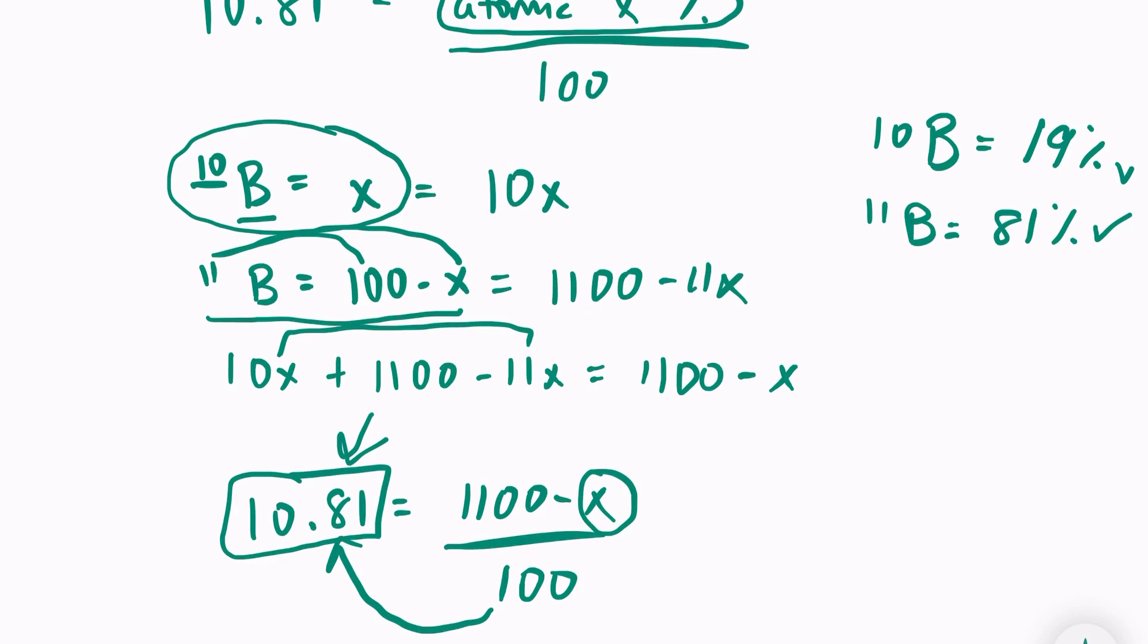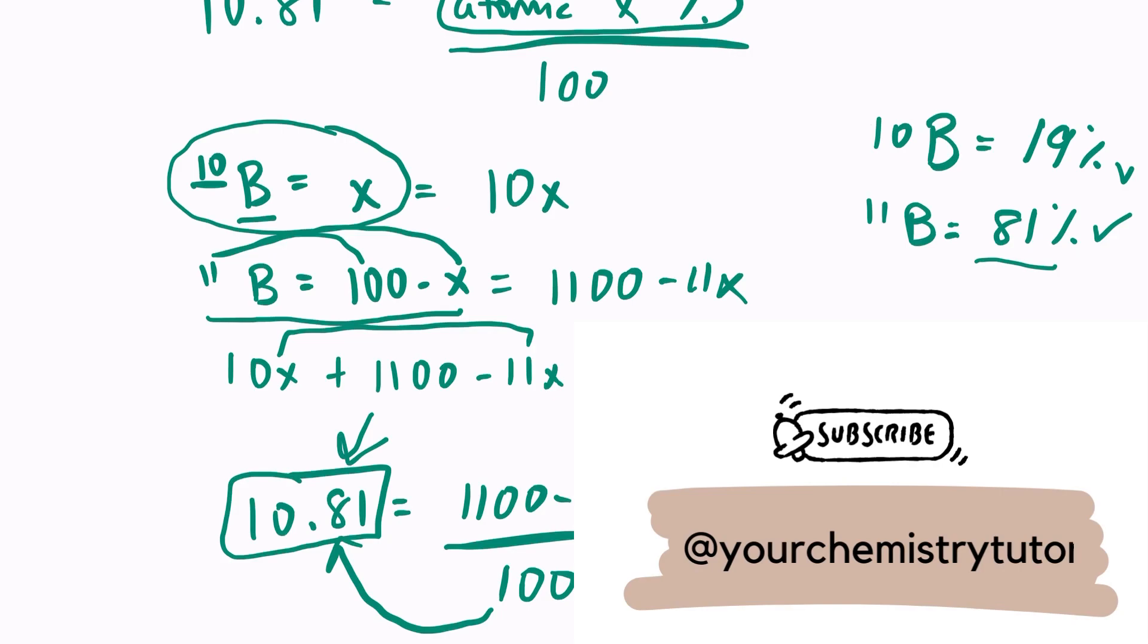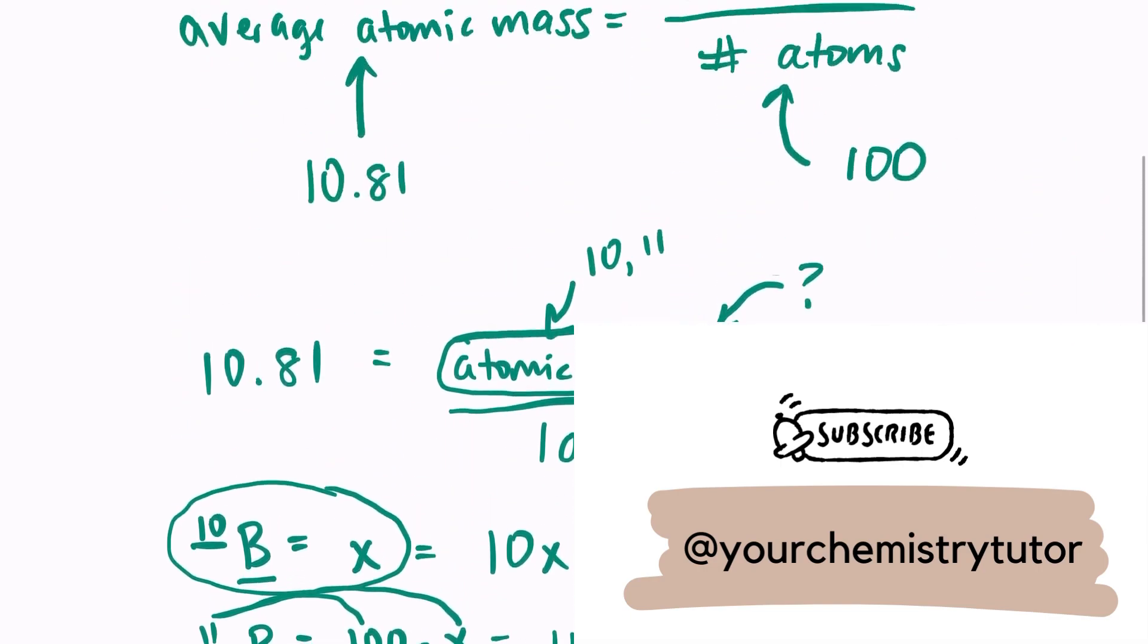So boron-10's percent abundance is 19, and boron-11 is 81. I hope this was helpful. I will put a harder question up on my channel as well, in case you're still struggling with this or just want some extra practice. Thank you so much for stopping by.